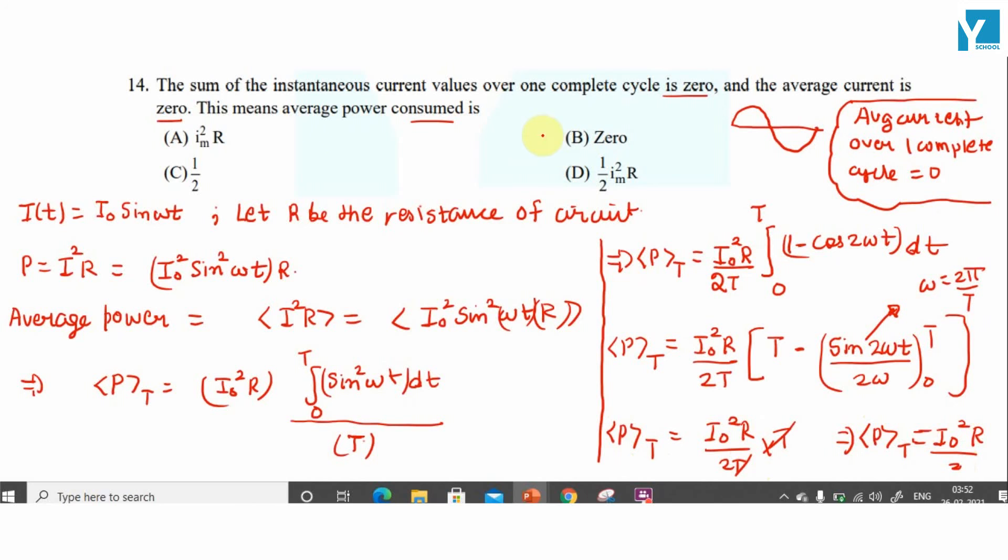Now looking at options, option D is the right answer. One difference is we have amplitude I₀ here; the rest is the same.